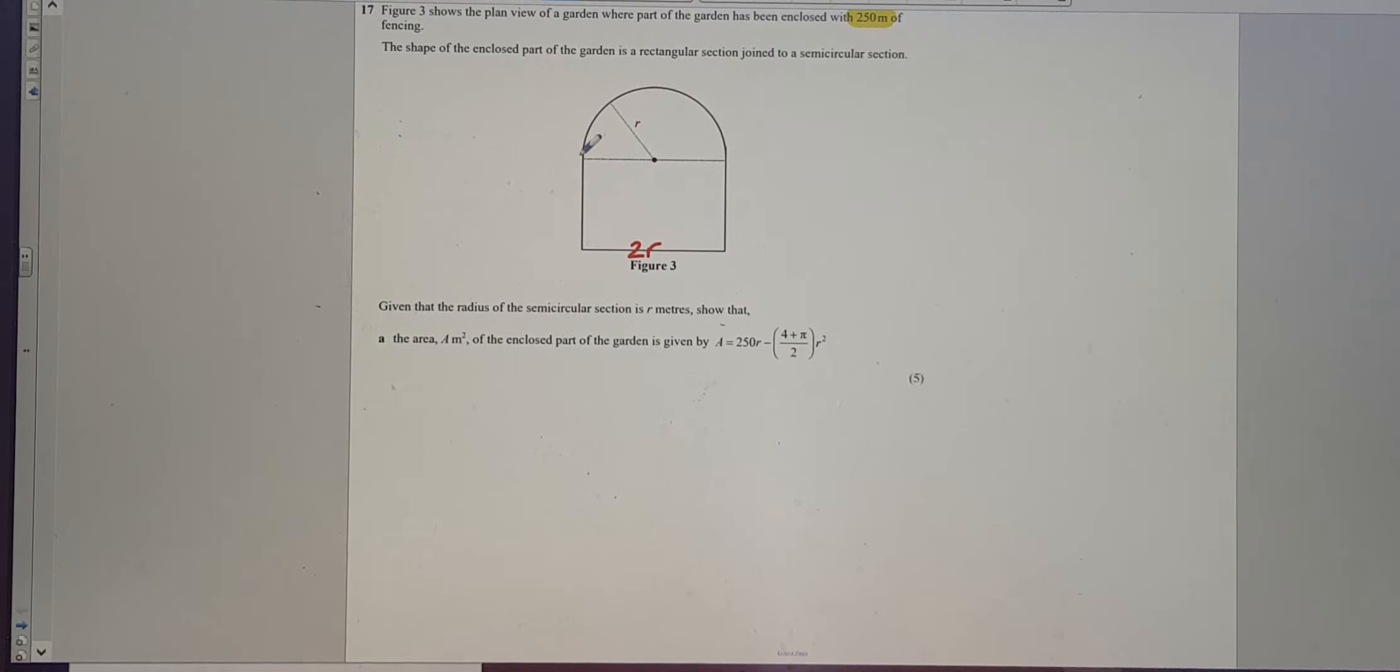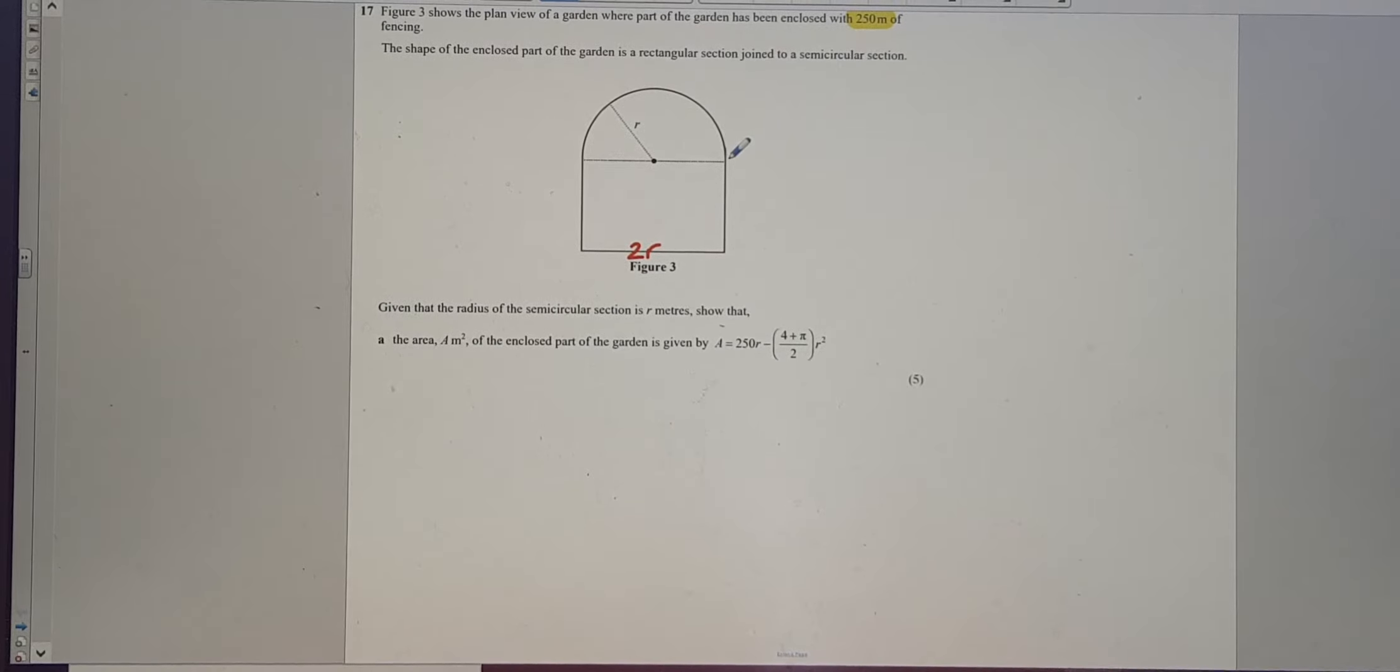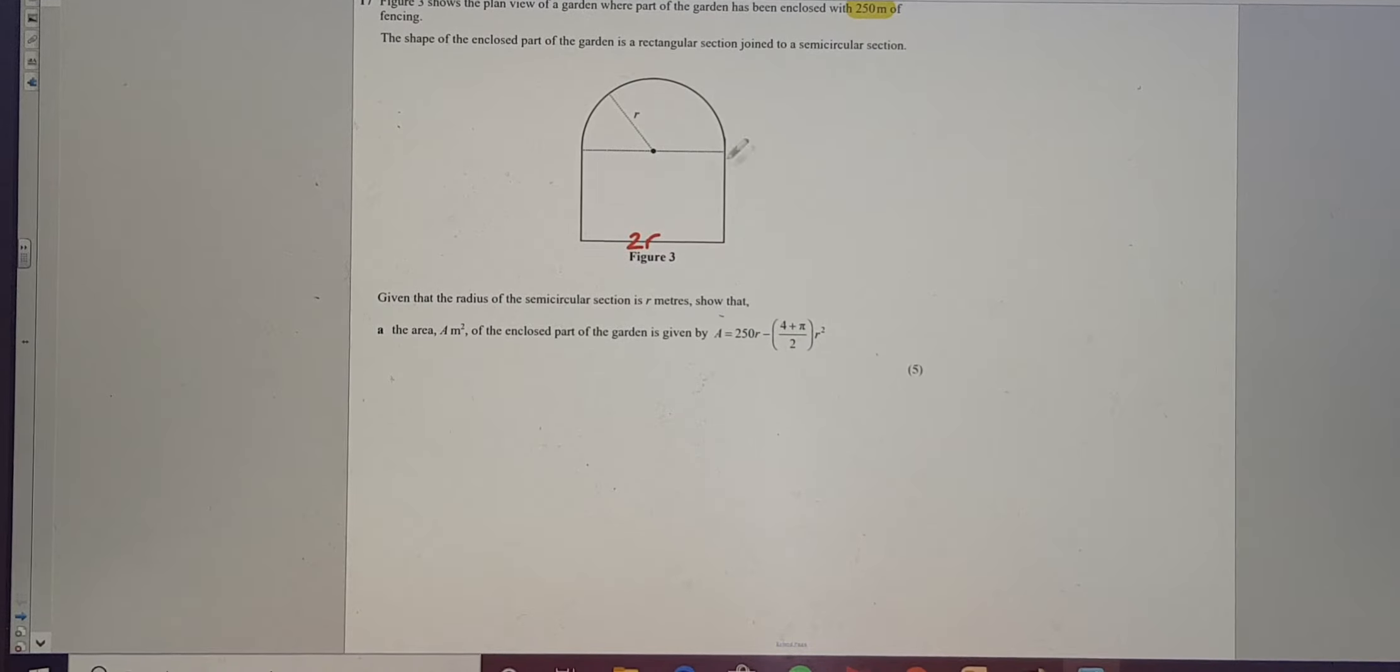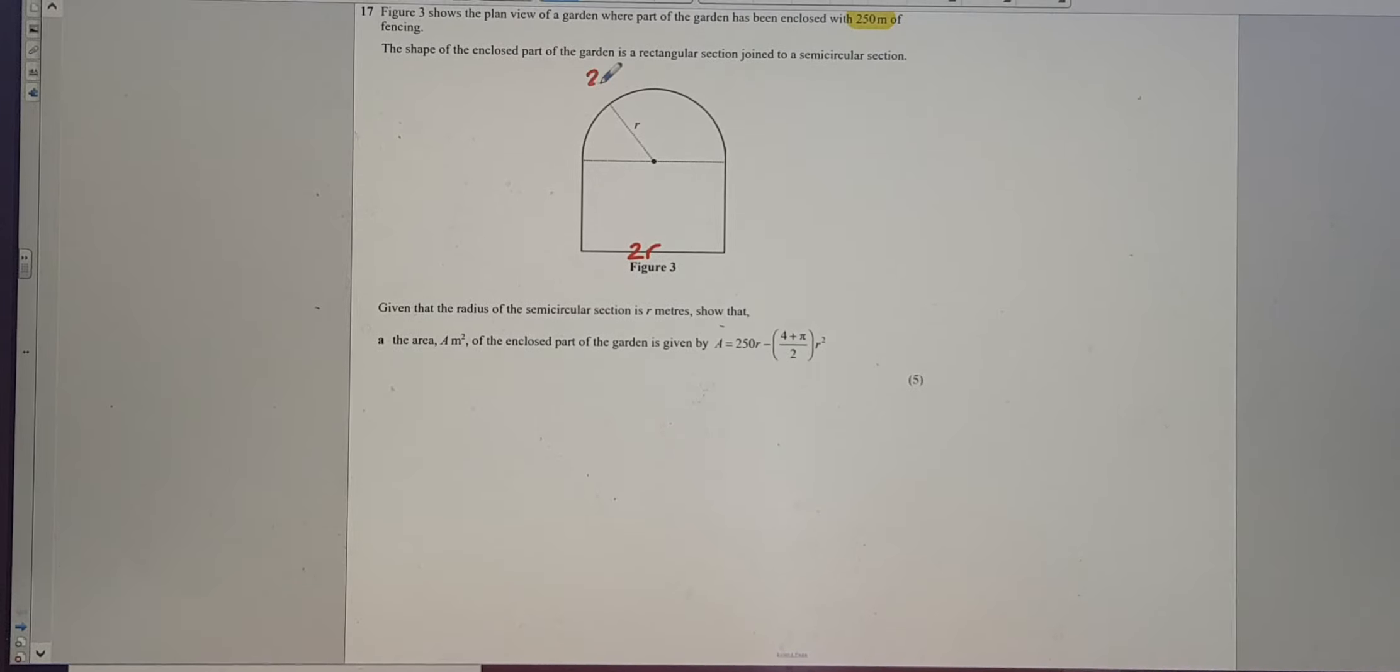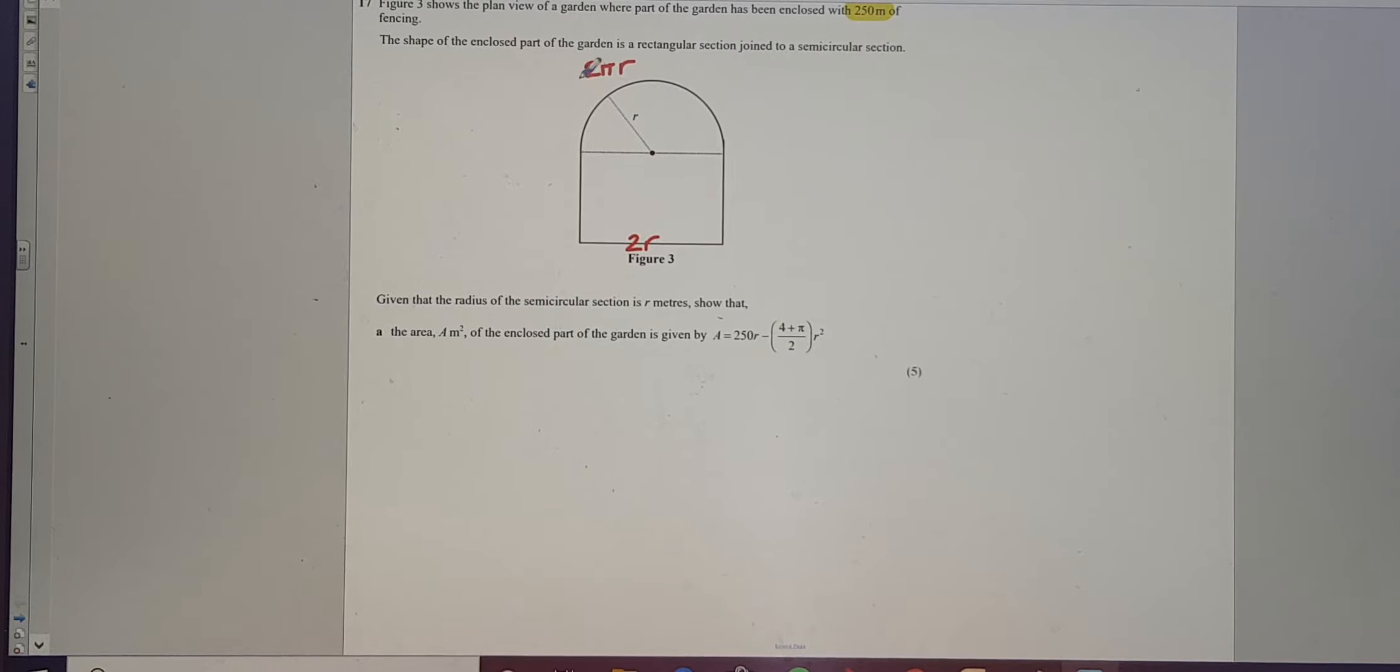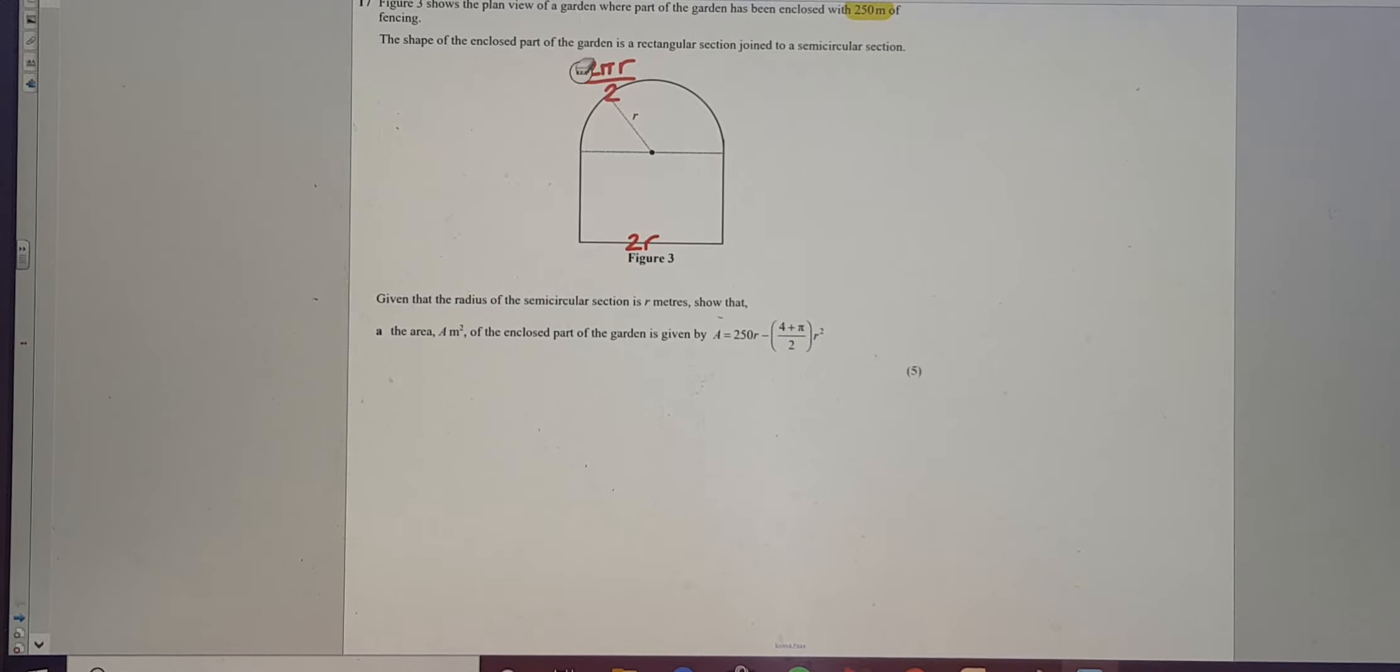Now, this bit, this semicircular bit, is half of the circumference. Circumference is pi times diameter divided by 2. The diameter in this case is 2r. So I've got, this bit's going to be pi times diameter or 2r times pi or 2 pi r. So that would be, if it was a whole circle, then I'm dividing it by 2. Therefore, that length, in fact, is just going to be pi r.